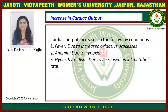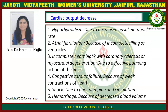Now we will see pathological conditions in which cardiac output increases and decreases. First we will discuss increase in cardiac output. Cardiac output increases in the following conditions: first is fever due to increased oxidative processes; second is anemia due to hypoxia; third is hyperthyroidism due to increased basal metabolic rate.